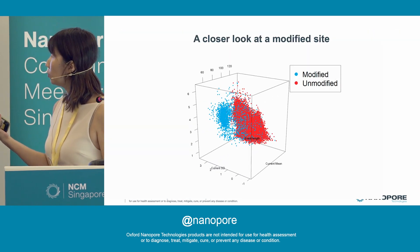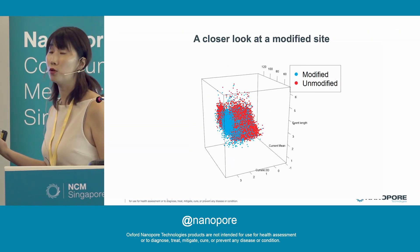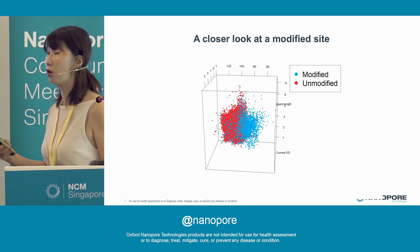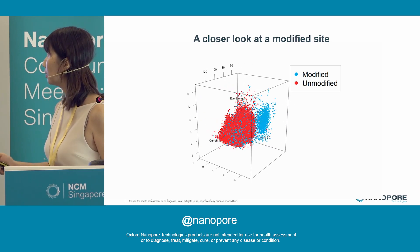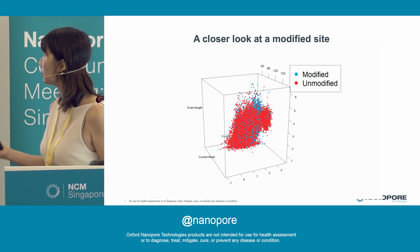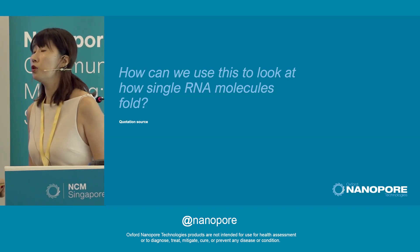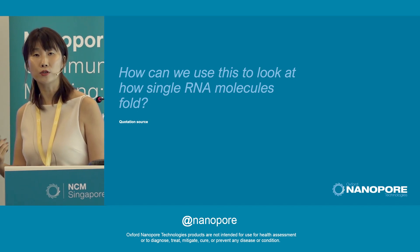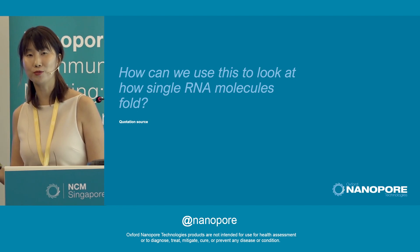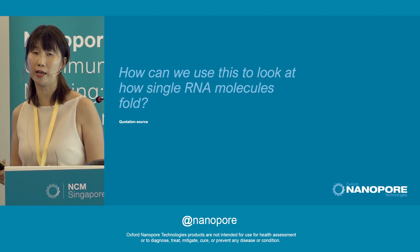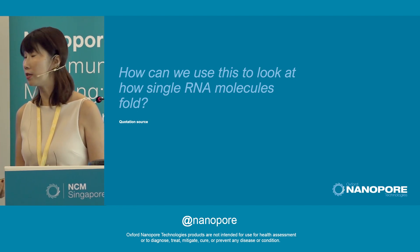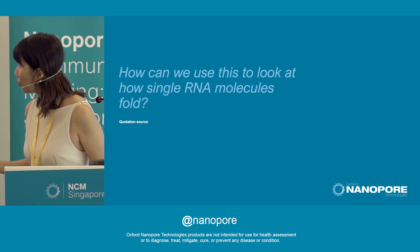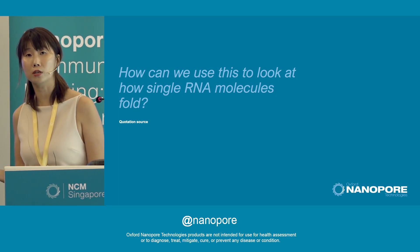This 3D view separates modified from unmodified bases, and we can quantify this to give us a single-stranded signal. We have applied this to the transcriptome of embryonic stem cells to look at how different isoforms from the same gene can have different structures impacting regulation such as translation. One of the questions we then had was: can we use this to look at single RNA structures at a single-molecule level?